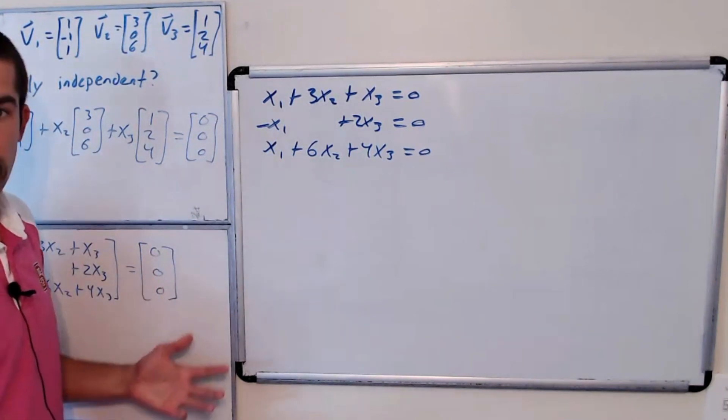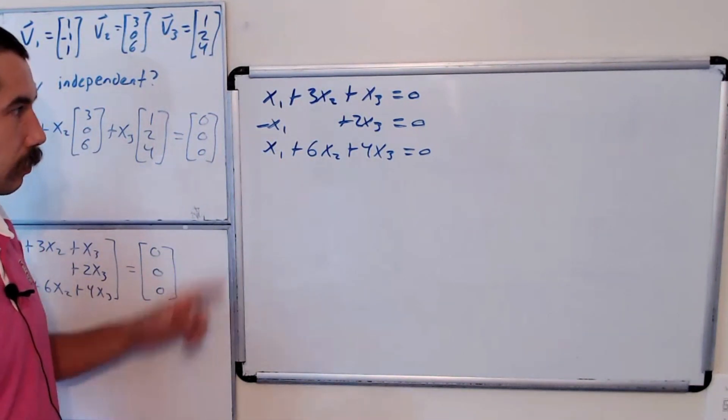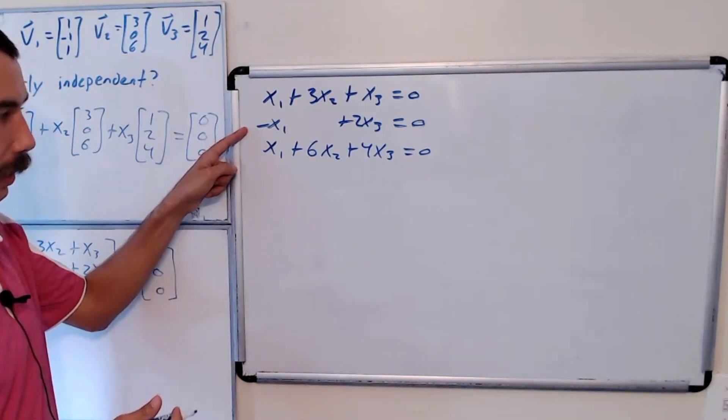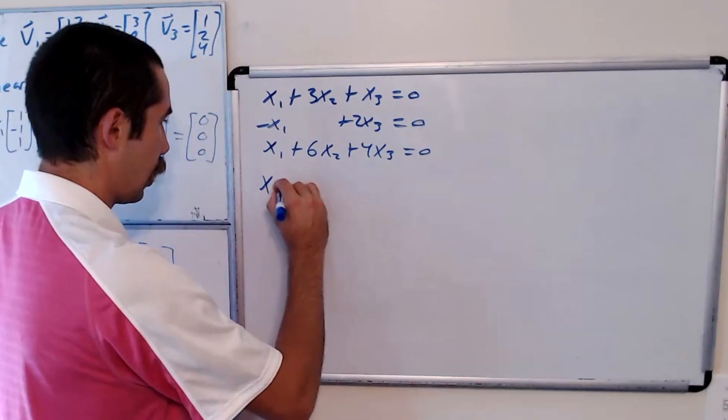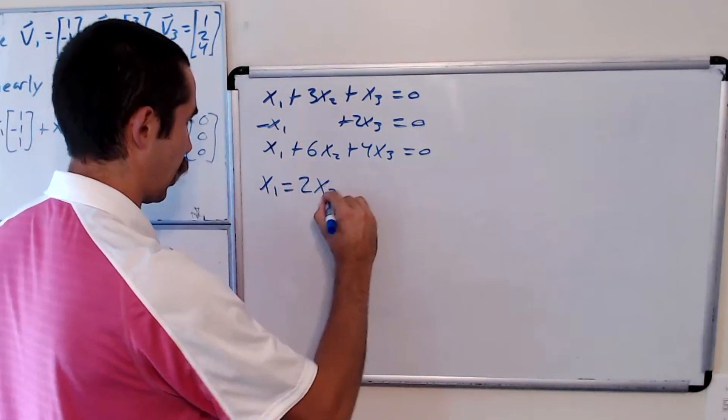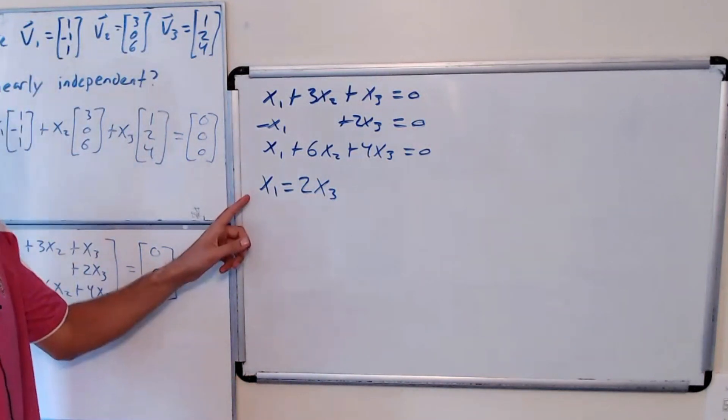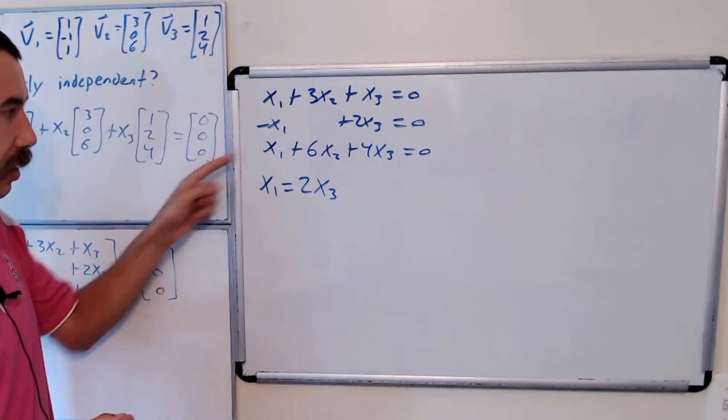And we want to solve this system of equations. Our second equation here gives us that x1 is equal to 2x3. So let's sub that into the first and third equation.